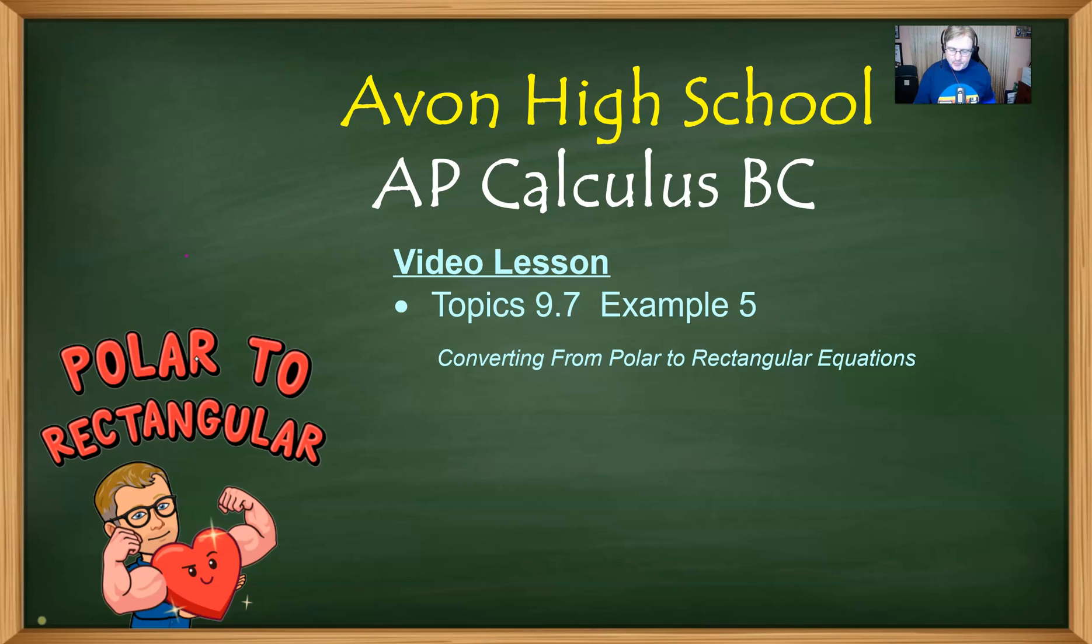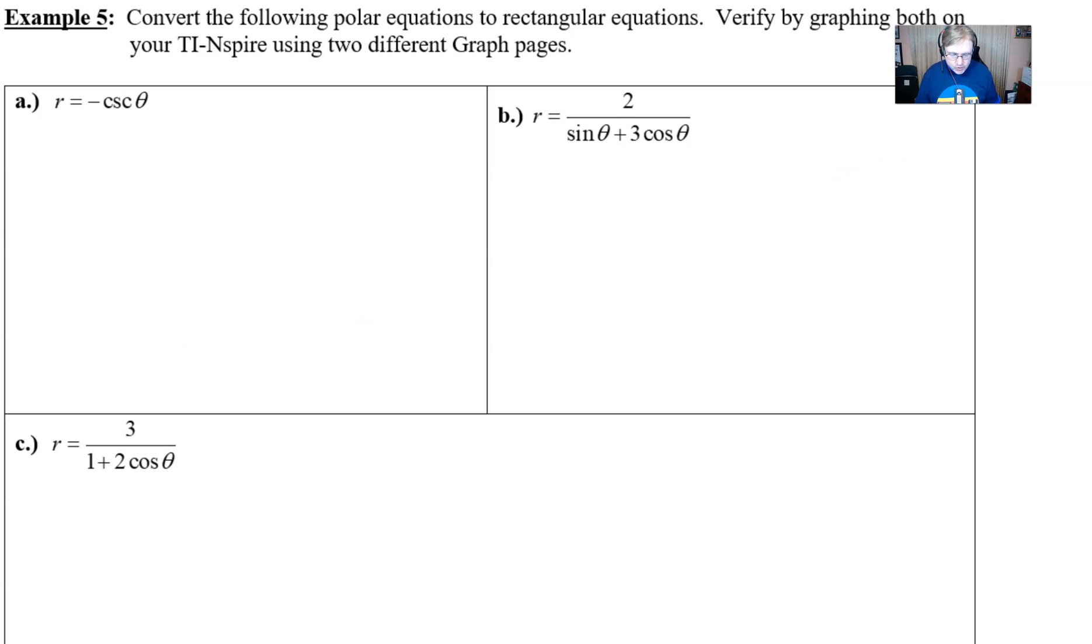In this example it's going to ask to convert these polar equations as you can see here in parts A, B, and C. And then once we convert them into rectangular we want to verify by graphing them on a graphing calculator. Just like I did in the last video I've already got these sketched out on the calculator. I've taken the screenshots and we'll show you exactly what they look like. But first we want to deal with the conversion.